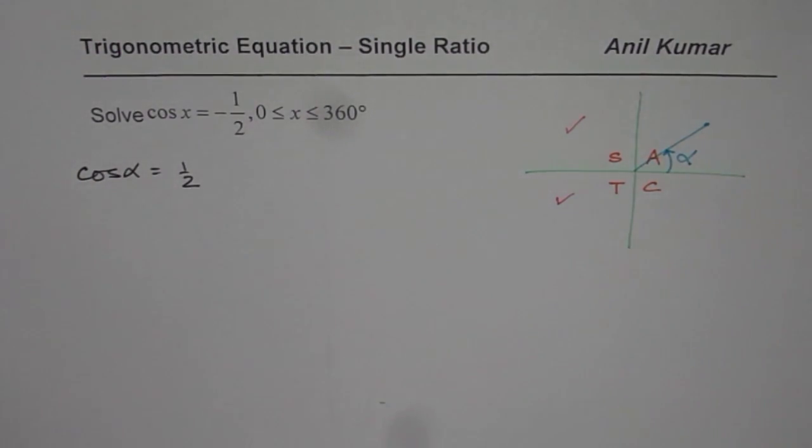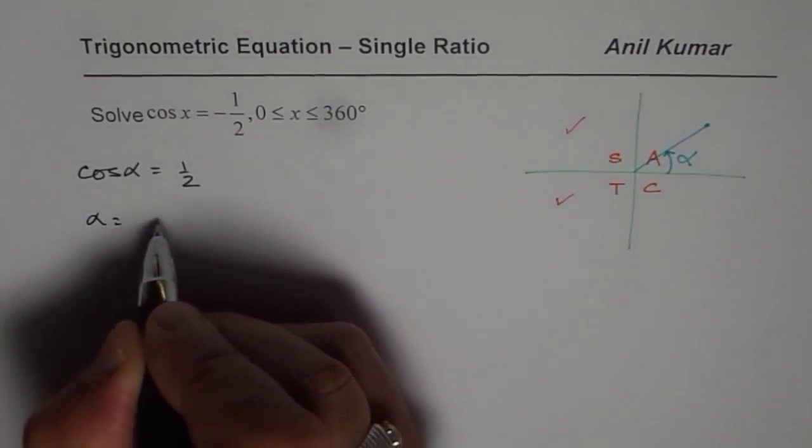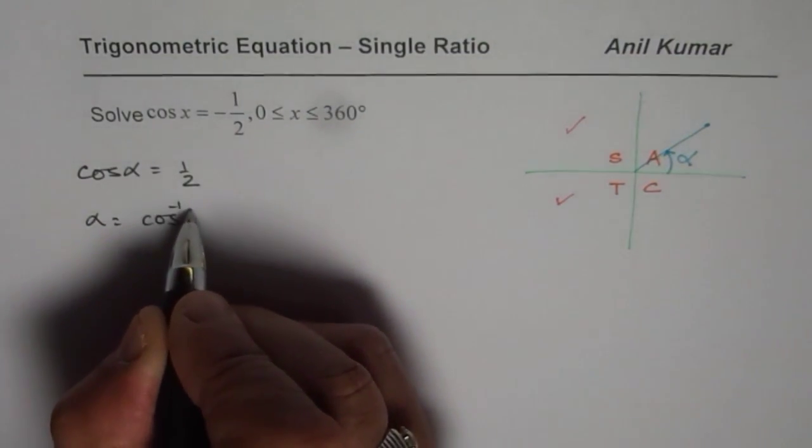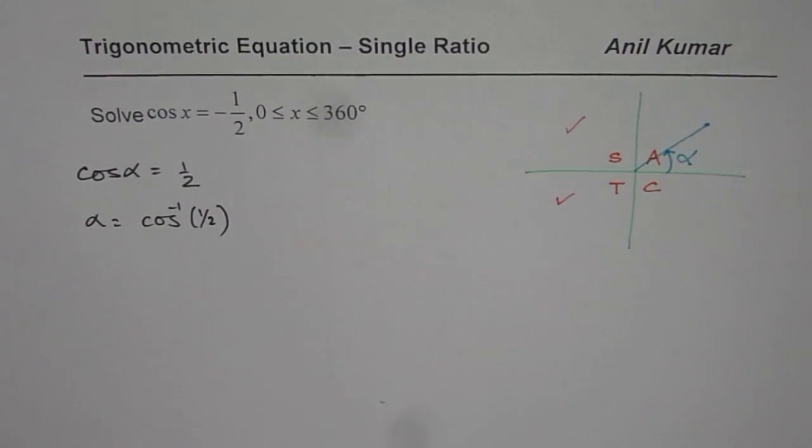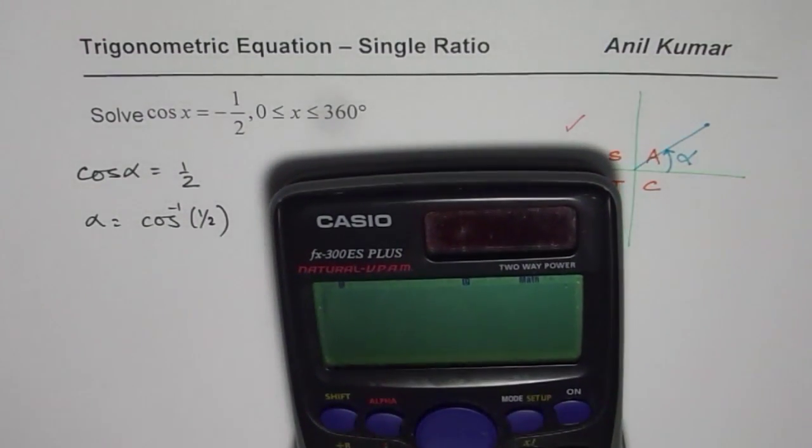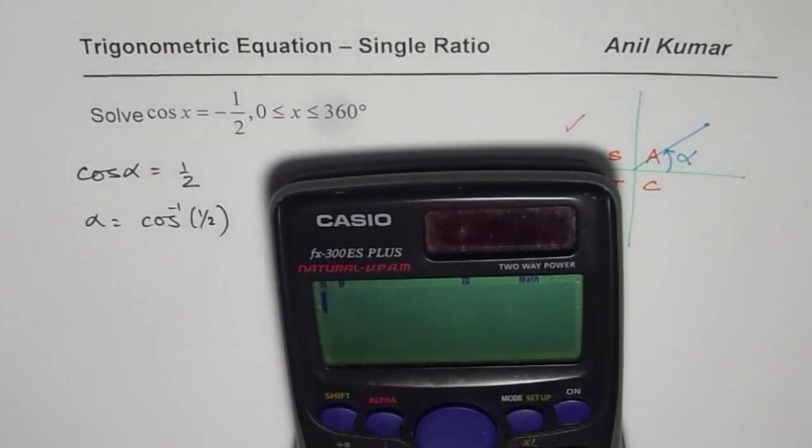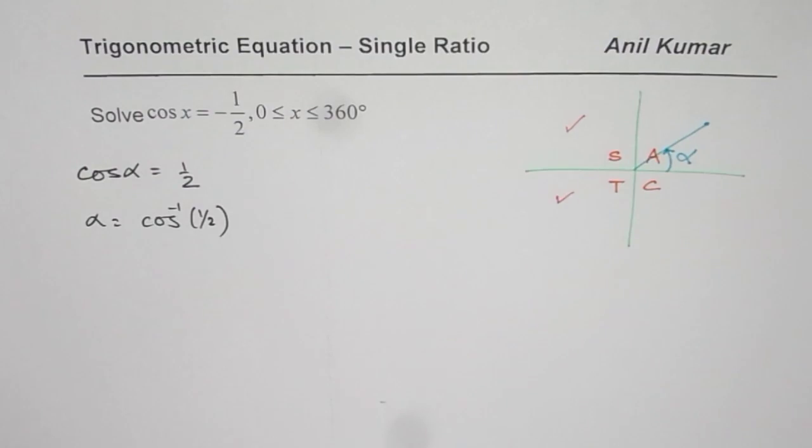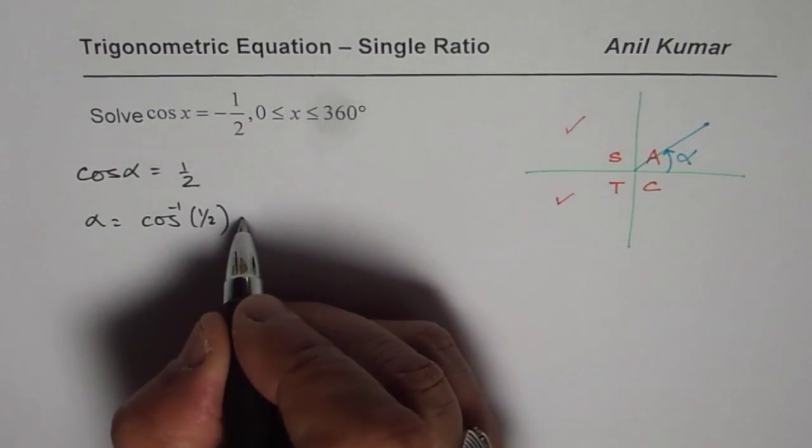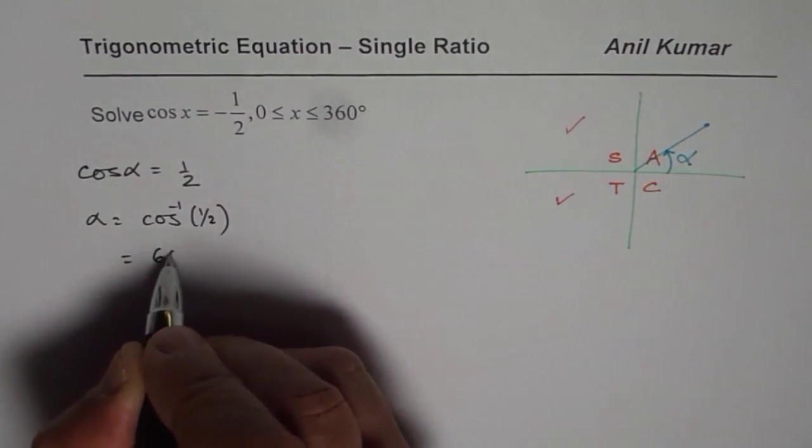Now how to find alpha? Alpha equals cos inverse of half. Now we can use calculator to answer this question: cos inverse of half. Second function, cos inverse, 1 divided by 2, bracket close, equals 60 degrees. So we get our answer as alpha equals 60 degrees.